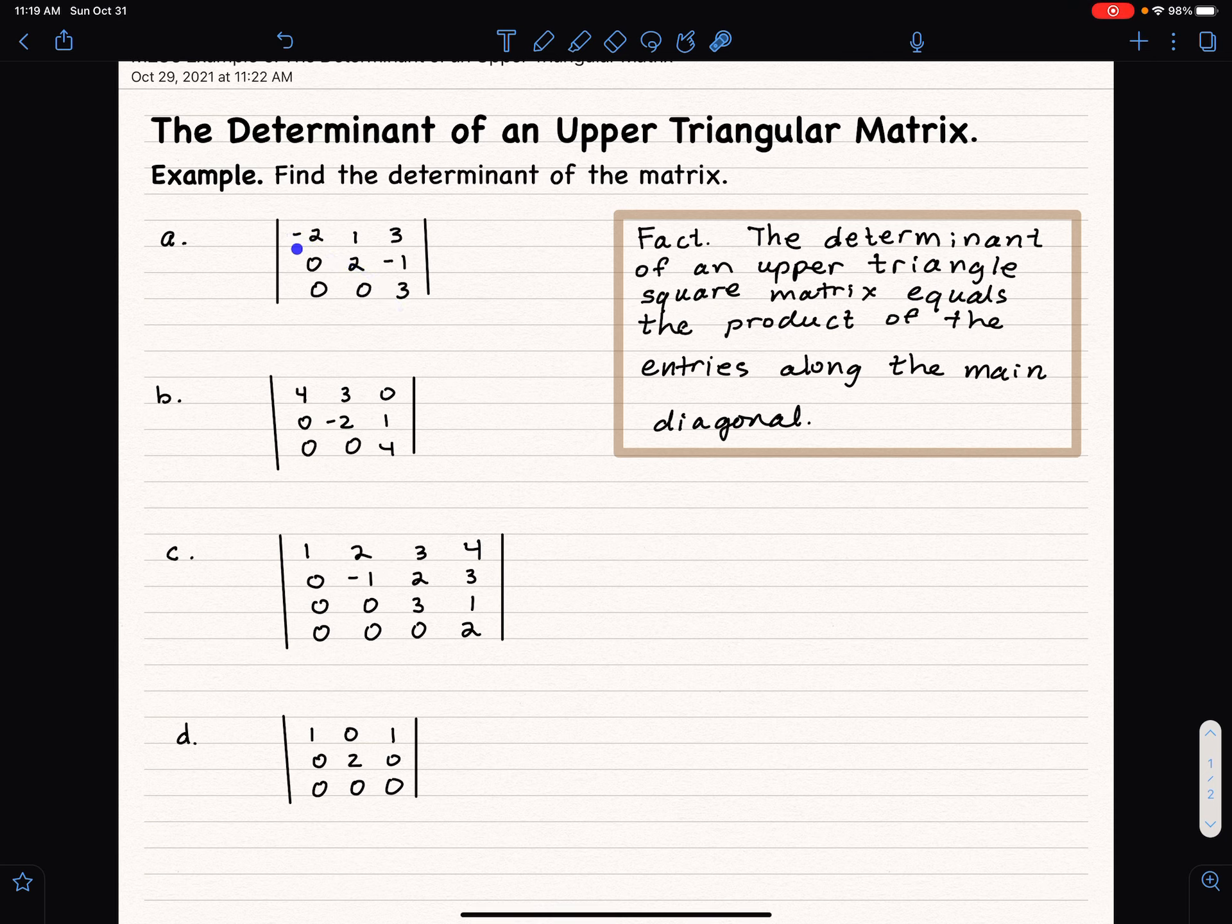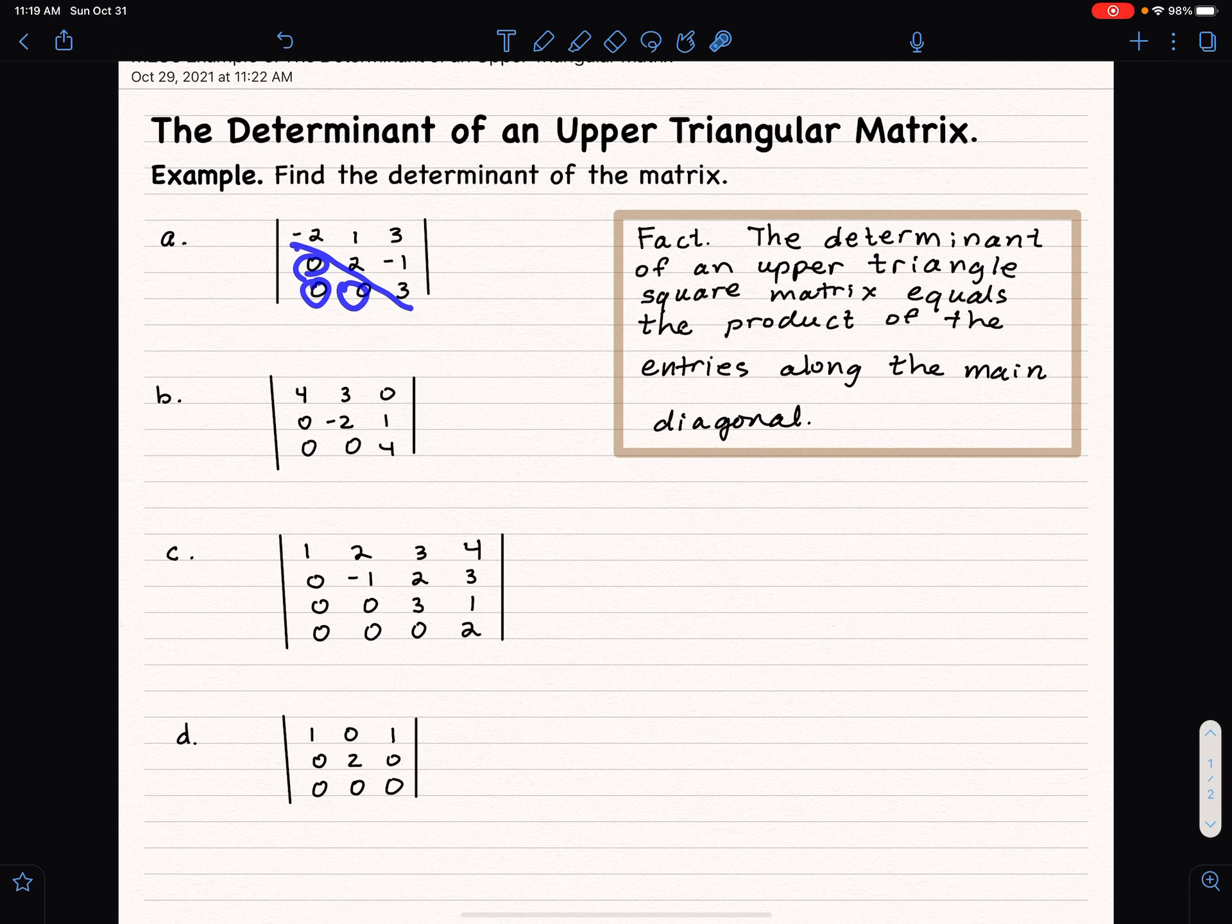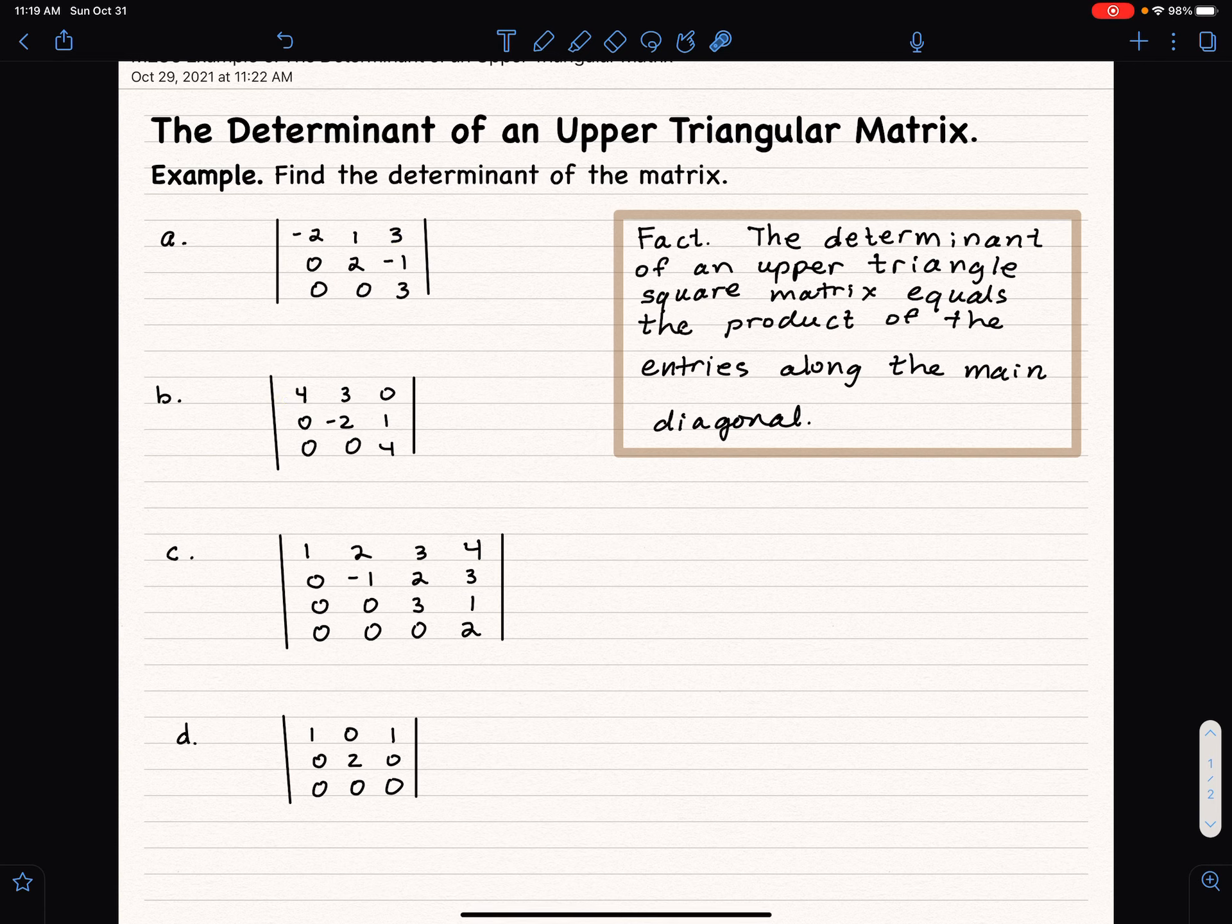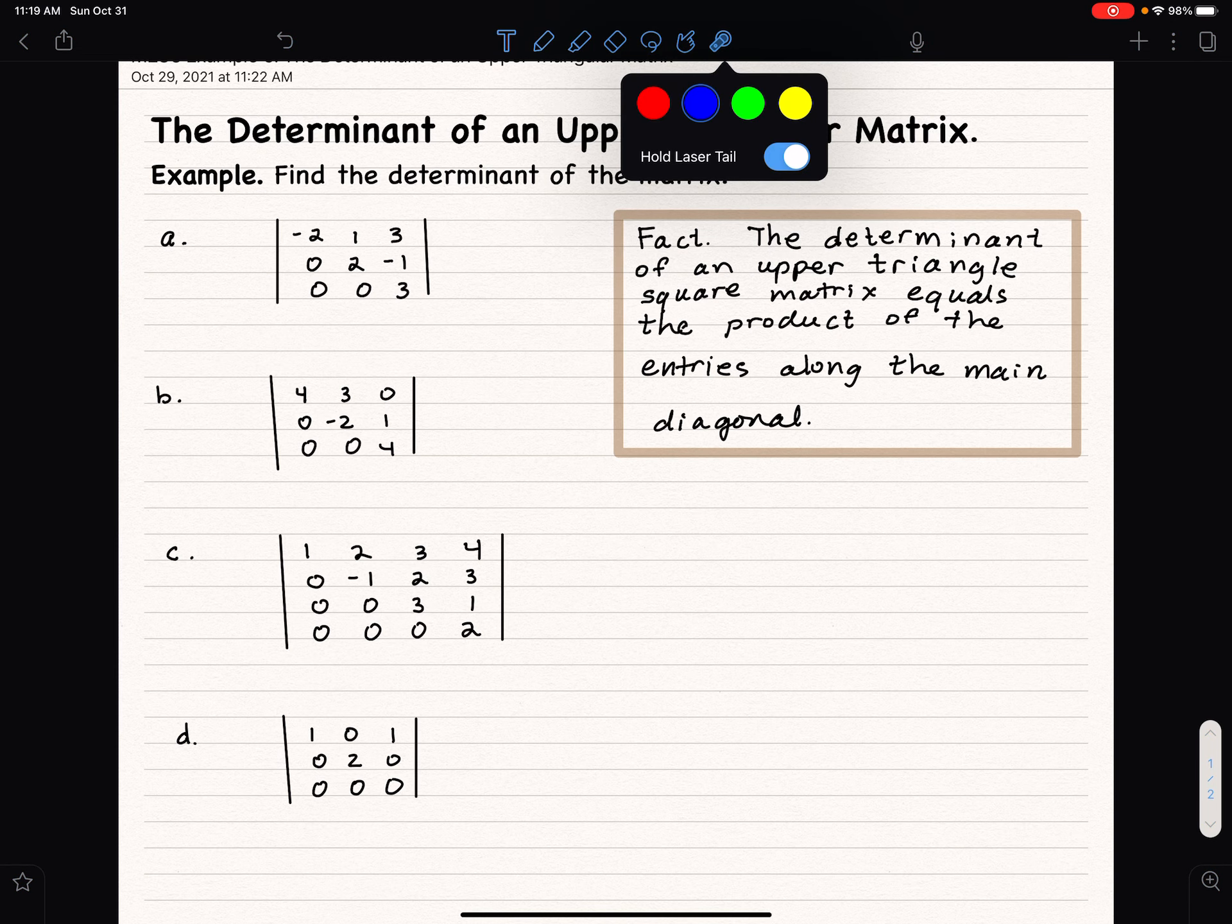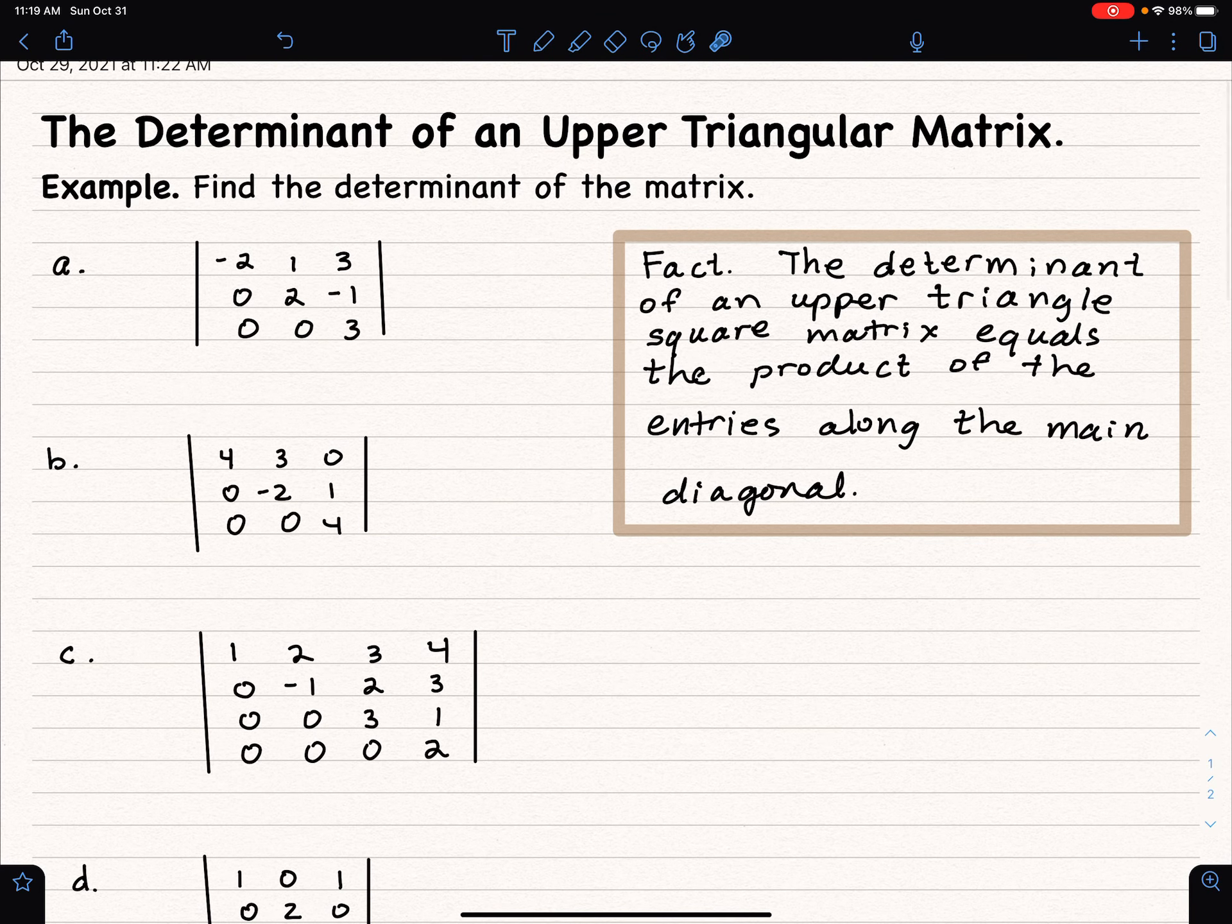Upper triangular means that all the entries below the main diagonal are zero. You could have entries zero above the main diagonal, like the second one here, but below the main diagonal, we need all zeros. This first one is in upper triangular form.